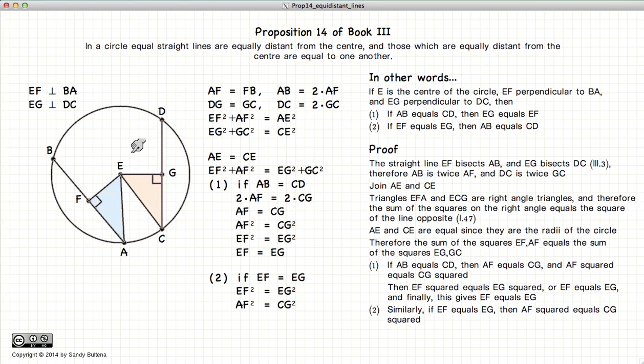Now, if we do the second part of the proposition, we start with the inverse. We say that EF is equal to EG. Well, using the same arguments as before, we can remove EF squared and EG squared, and we are left with AF squared is equal to CG squared, or that AF is equal to CG.